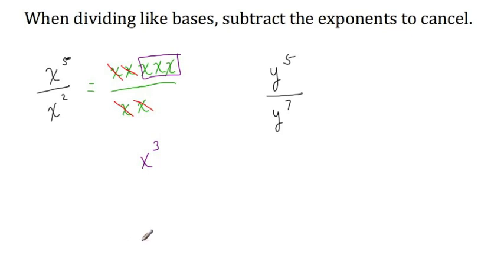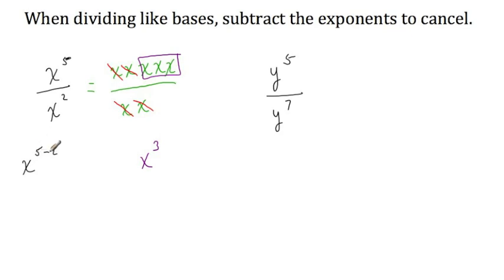That's exactly the same result we would get if we apply this rule: we subtract the exponents to cancel. So we have x to the fifth divided by x squared — the exponents are 5 and 2. Since there are more x's in the numerator, just like when we wrote it out, that means our answer will be in the numerator. So when we do the subtracting, we subtract the larger from the smaller in the numerator. This x to the 5 minus 2 power simplifies to x cubed, just like we saw when we worked it out using the definition of an exponent.